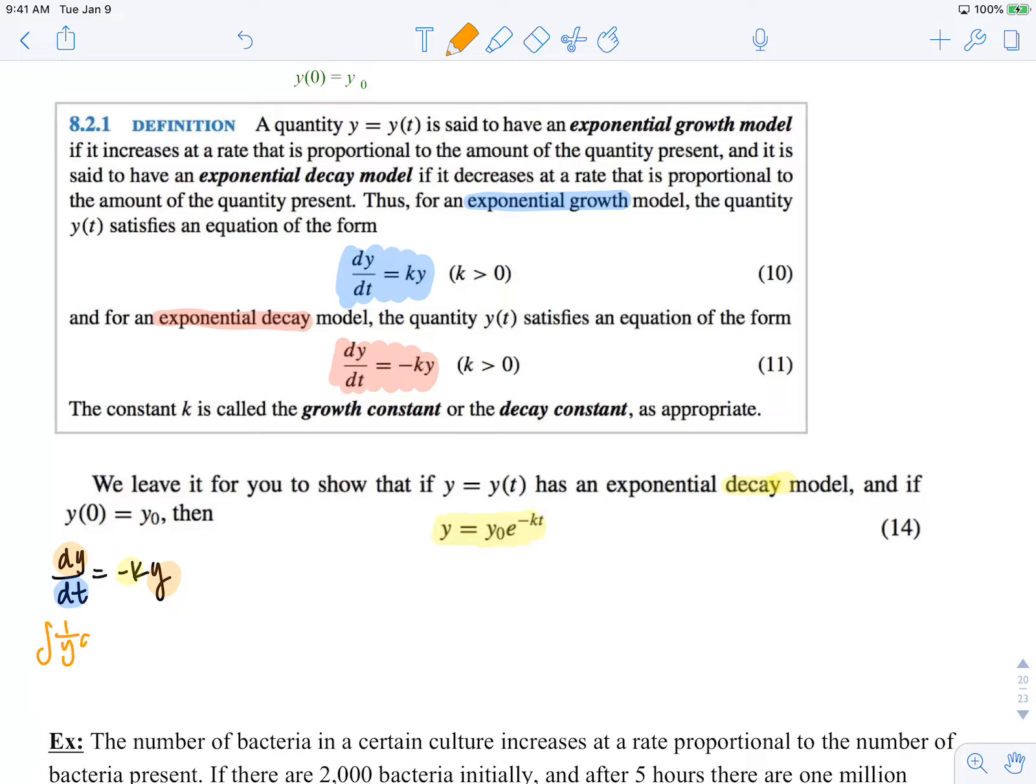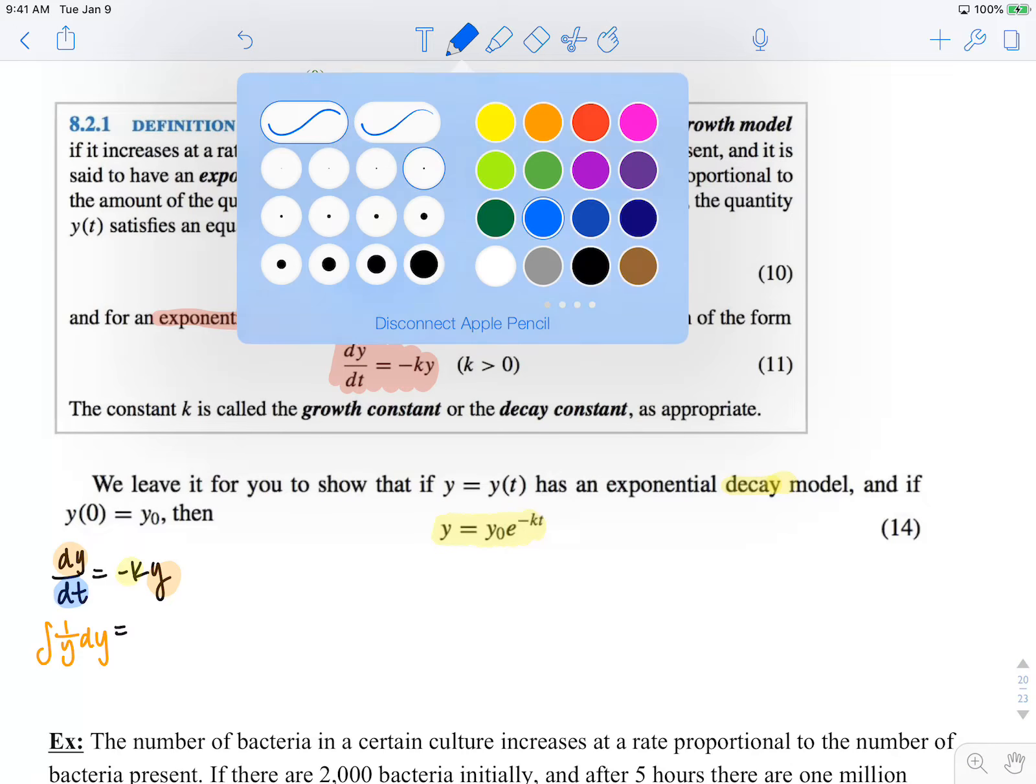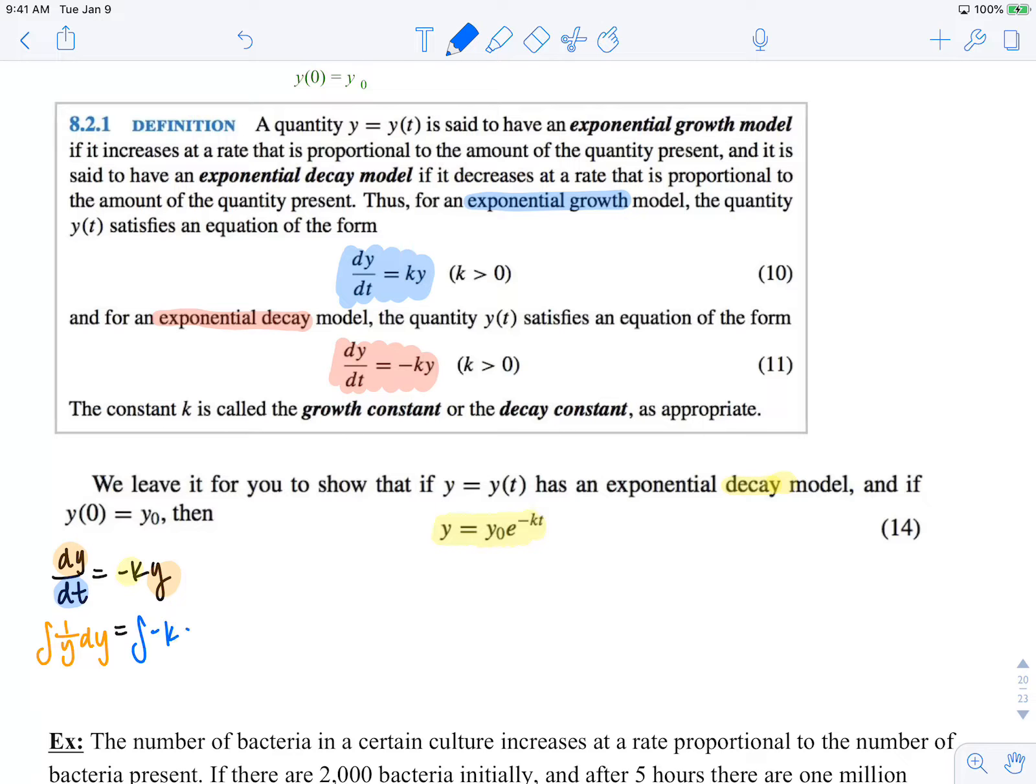I have the integral of 1 over y dy equals the integral of negative k dt. Solving this using antiderivatives, it's ln absolute value of y plus c1 equals negative kt plus c2. Consolidating our constants, ln absolute value of y equals negative kt plus c3.